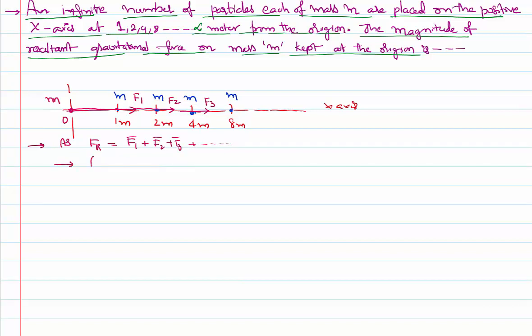But if you notice carefully, all these forces are acting in the same direction. When theta is zero, vector addition is simply equal to scalar addition itself: F1 plus F2 plus F3 and so on. If two vectors are parallel to each other, theta becomes zero. F_resultant becomes F1 plus F2, that's what we learned in vectors.